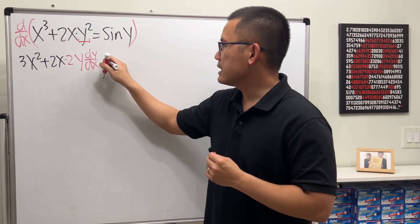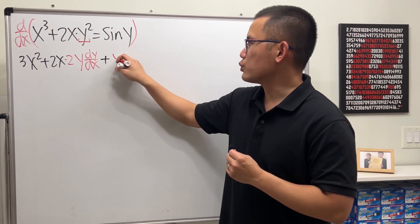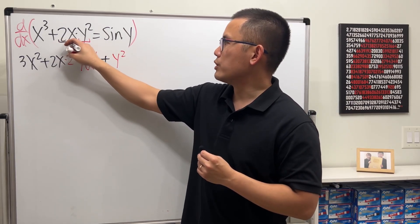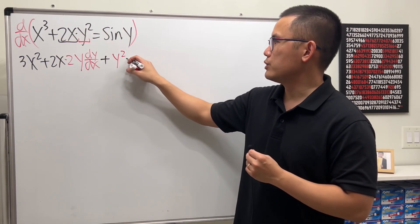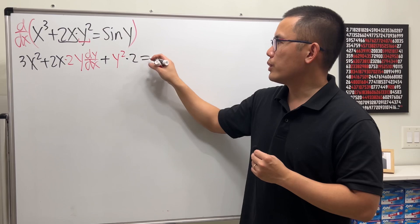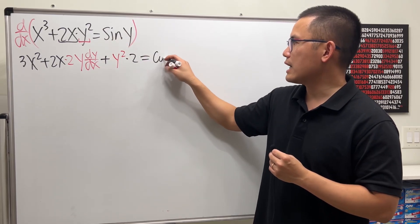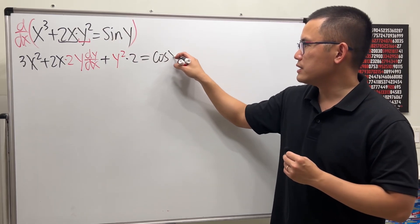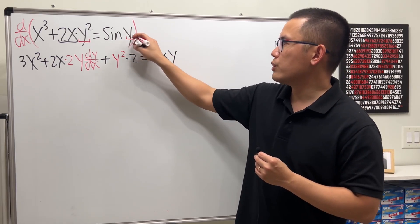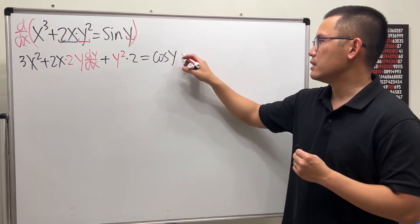And then we will add the second function, which is y squared, times the derivative of the first, which is just going to be 2. And that's equal to the derivative of sin is cosine, and then the input stays. But I use the chain rule. The derivative of y is dy/dx.